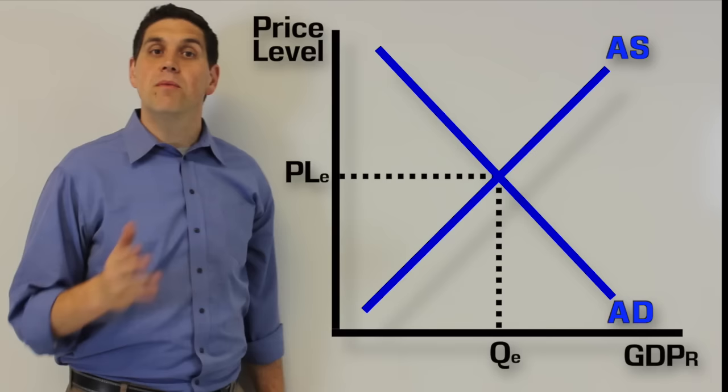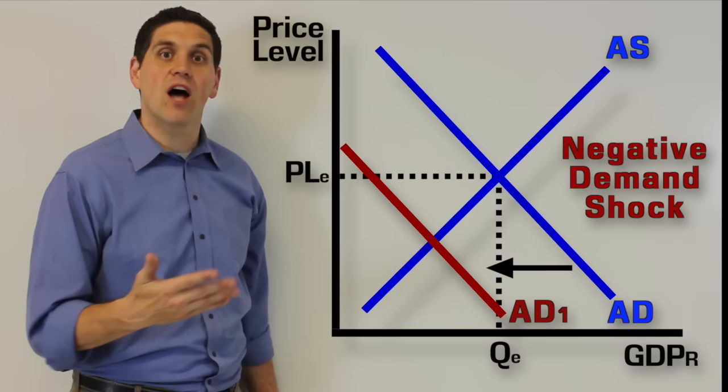A demand shock is when the aggregate demand shifts. For example, during the Great Depression, there was a decrease in the stock market, which caused a decrease in consumer wealth and a decrease in consumer spending. This was a demand shock.